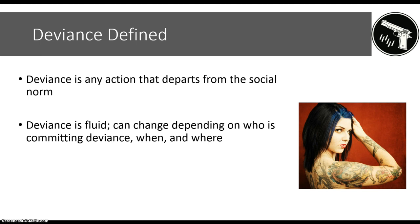For instance, tattoos are something that for a long time were seen as very deviant, but over the years they have gained social acceptance. This shows us that deviant behavior is fluid — it changes from time to time, and what is considered deviant in one situation is not considered deviant in another.